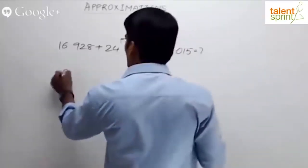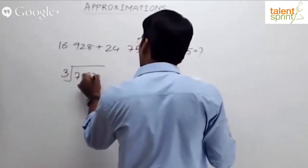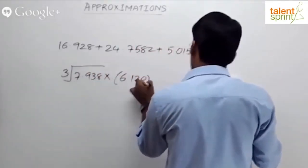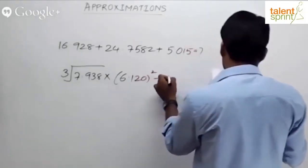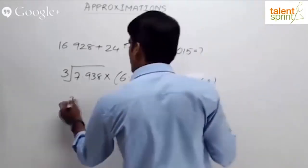Look at this one: cube root of 7.938 multiplied by 6.120 whole squared minus 4.9256 equals to what? The options are 70, 55, 30, 25, and 90.